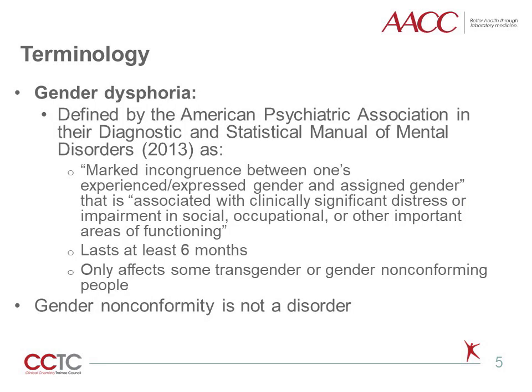Gender dysphoria is defined by the American Psychiatric Association as a marked incongruence between one's experienced or expressed gender and assigned gender that is associated with clinically significant distress or impairment in social, occupational, or other important areas of functioning, and that lasts at least six months. It is important to understand that gender dysphoria only affects some transgender or gender nonconforming people, and that gender nonconformity itself is not a disorder.